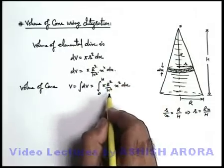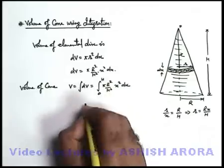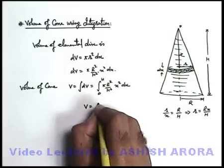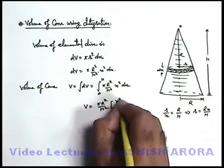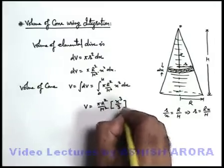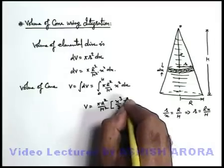Here πR²/h² is a constant, it can be taken out of the sign of integration. It'll be πR²/h² times integration of x² which will become x³/3. This is integrated from zero to h.